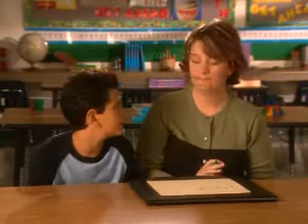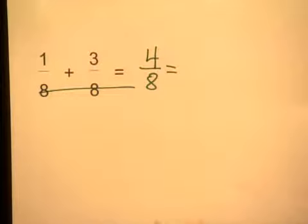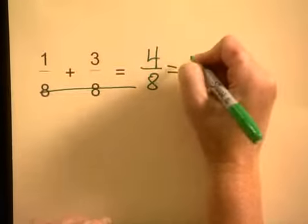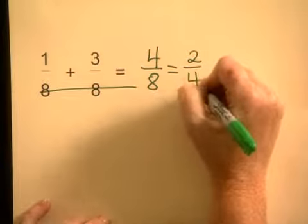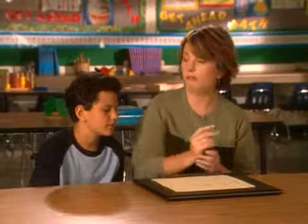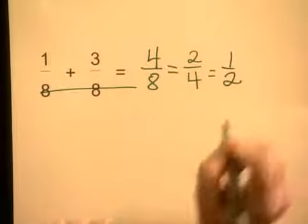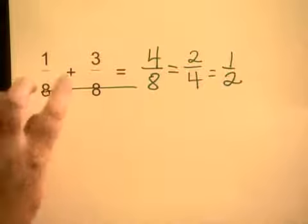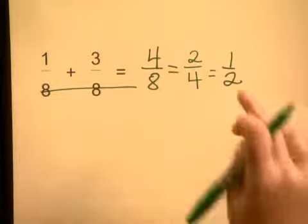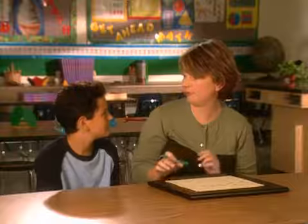Can we simplify that at all? Yes — 2 fourths. Can we simplify that at all? Yes — 1 half. So 1 eighths plus 3 eighths simplifies down to 1 half.